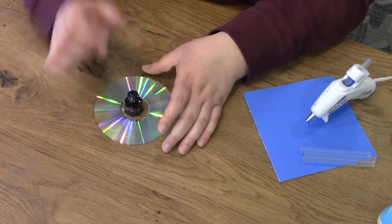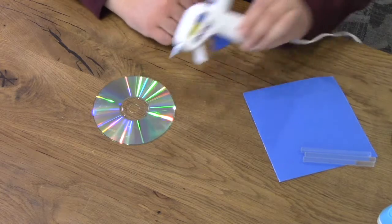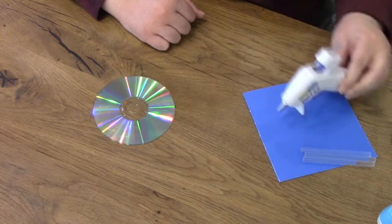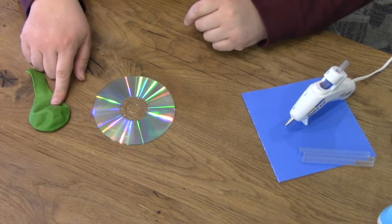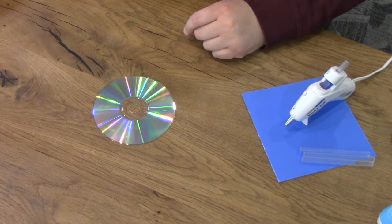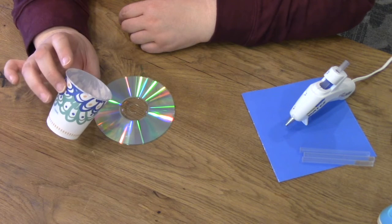You don't want something too heavy to sit on top of the CD. We're also going to use a hot glue gun, a balloon, and a Dixie cup which we can use to support our balloon.